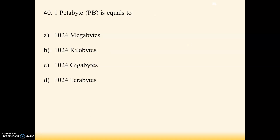Next question: 1 petabyte equals — options are 1024 megabytes, 1024 kilobytes, 1024 gigabytes, 1024 terabytes. Option D is the right answer — 1 petabyte equals 1024 terabytes. Thank you.